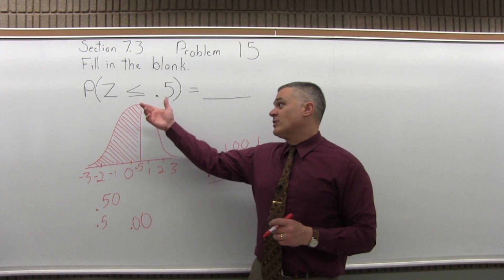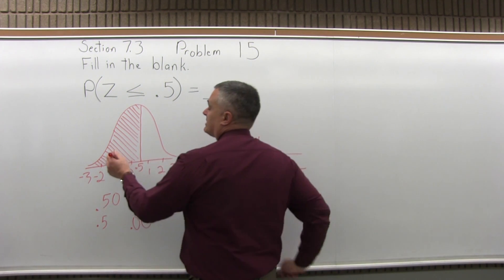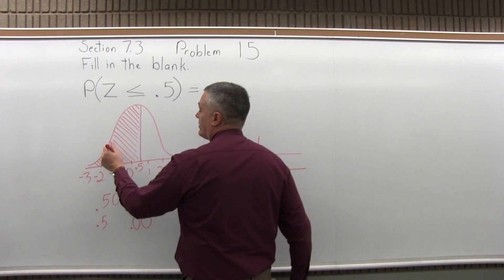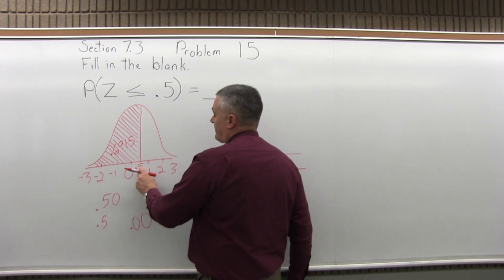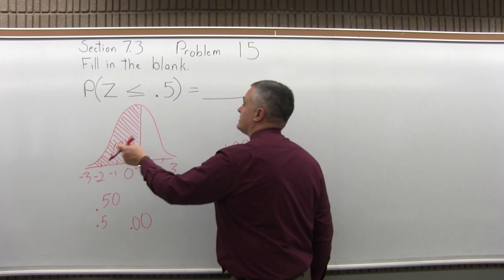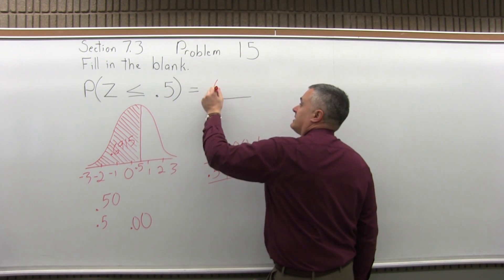Now because this is a less than question, that's the answer. The chart is set up to tell us the area to the left of what we looked up. So we looked up .5, we got 6915, that goes to the left, we wanted what was to the left, so that's the final answer.